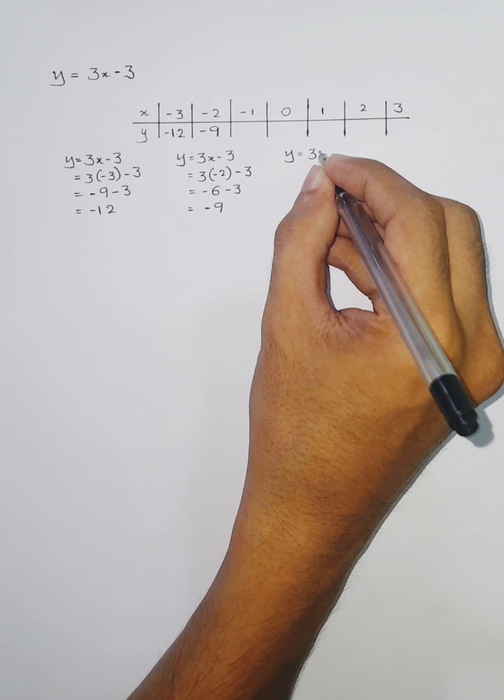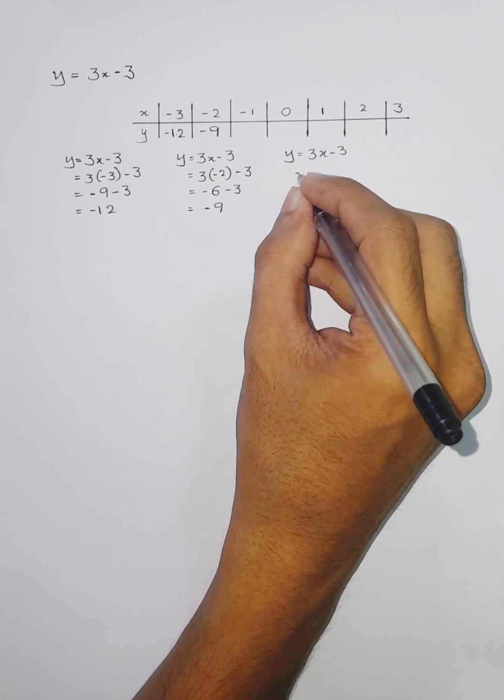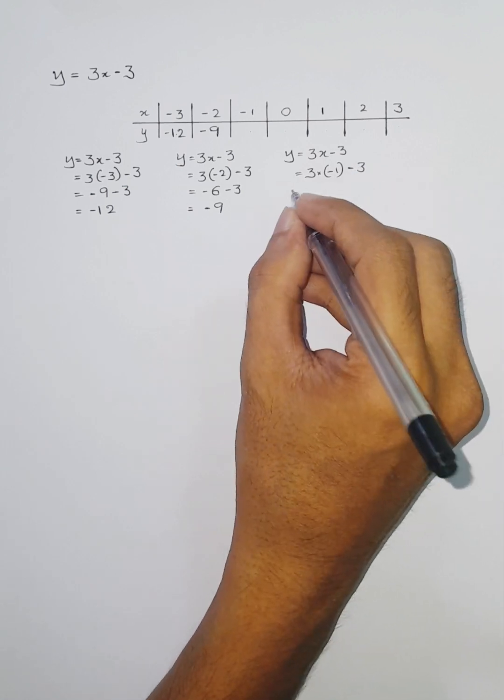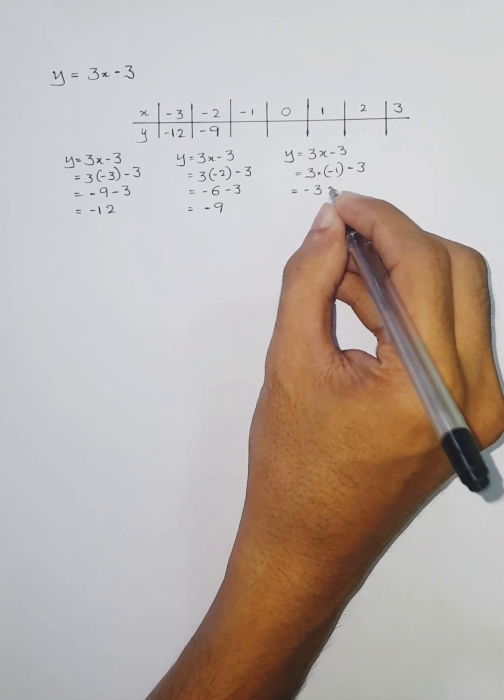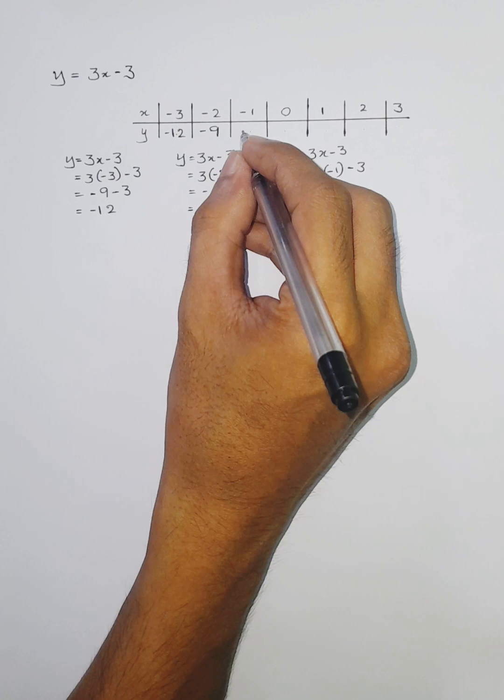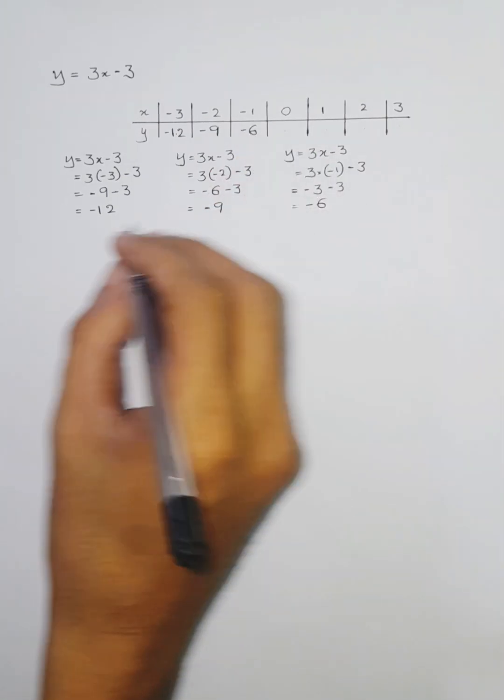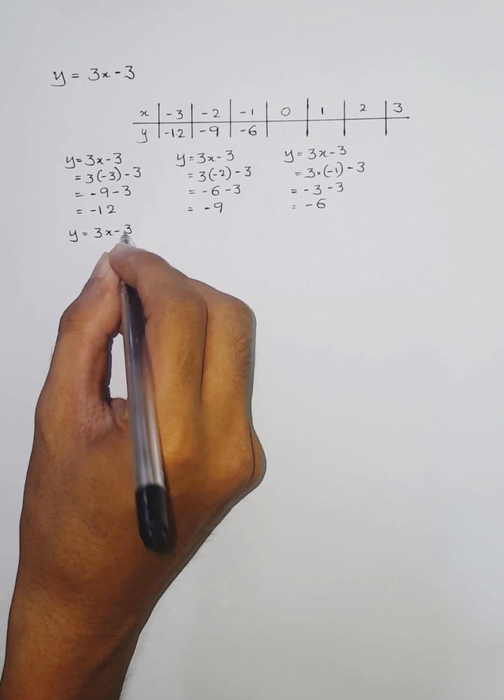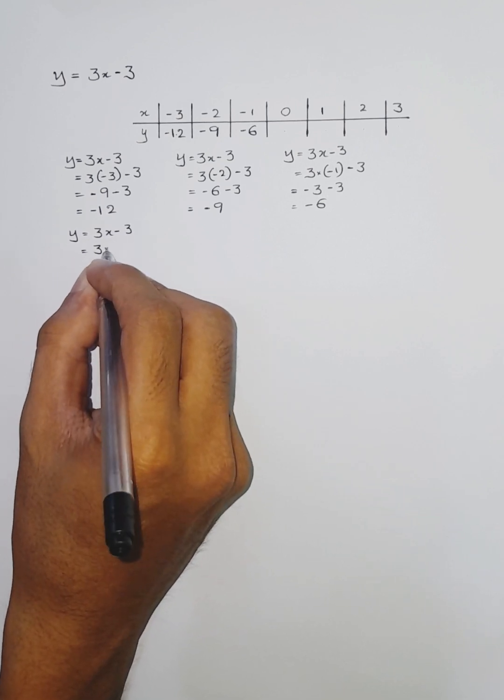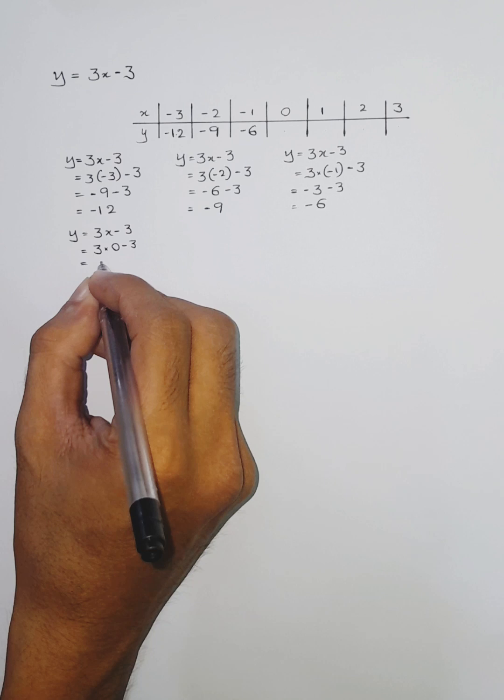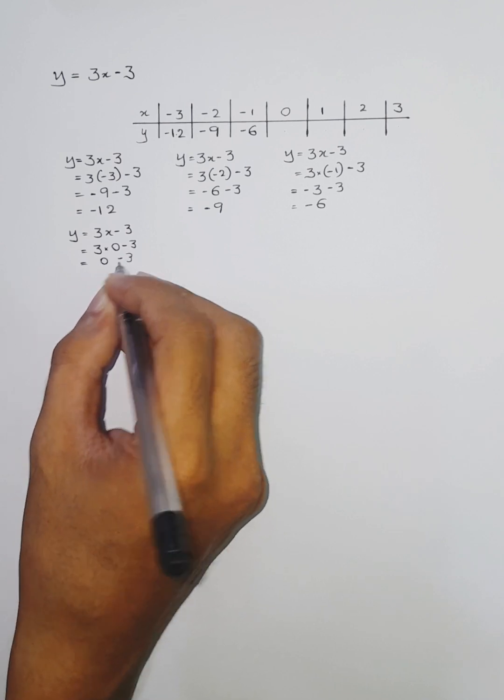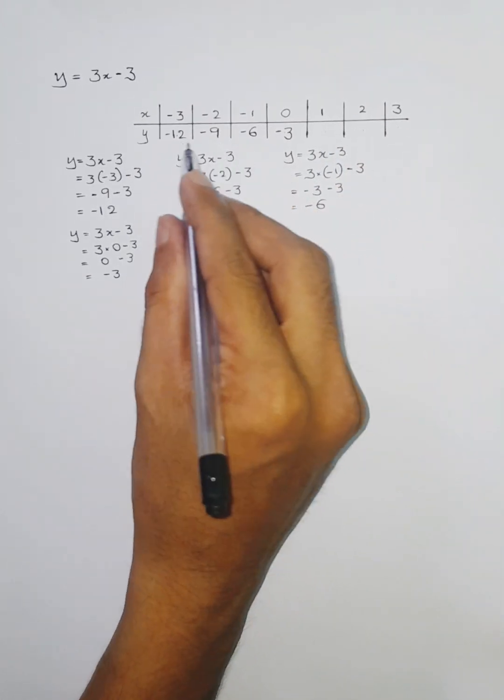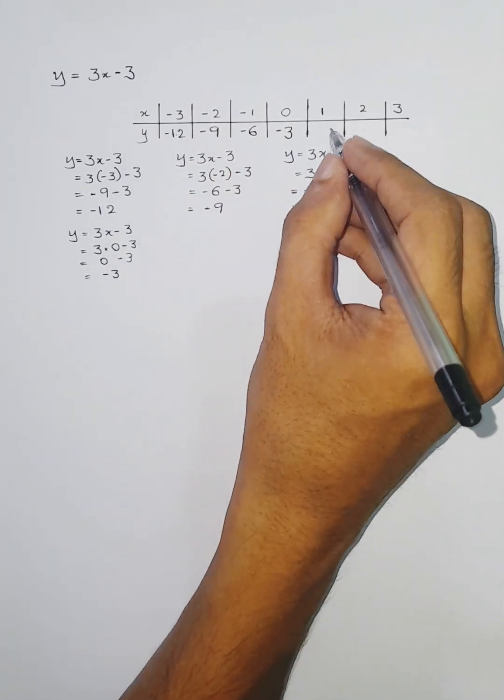And then the next, y = 3x - 3, and that is -6. And now the next, y = 3x - 3, and 3 times x is now this time 0. 3 times 0 is 0, 0 minus 3, the answer is -3. Okay, so you all can see there is a pattern, right? 12, 9, 6, 3, then 0.